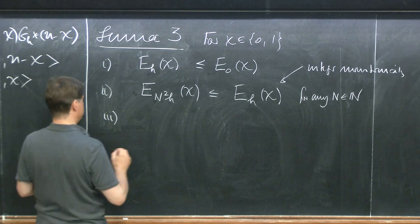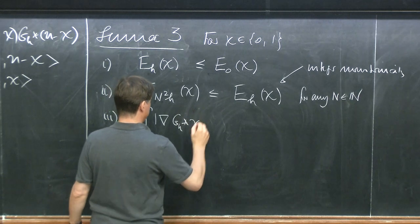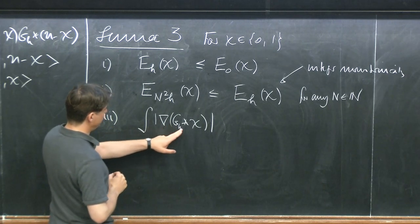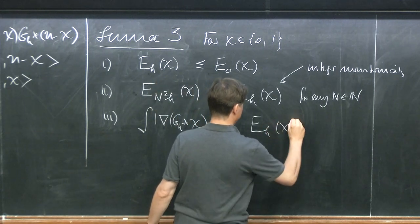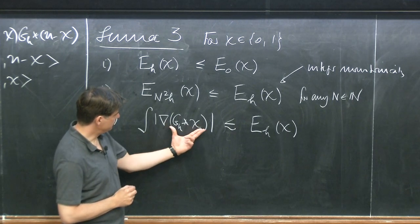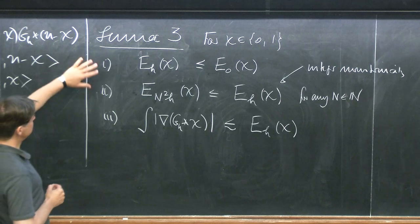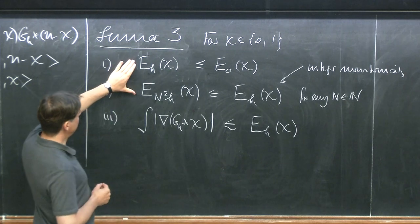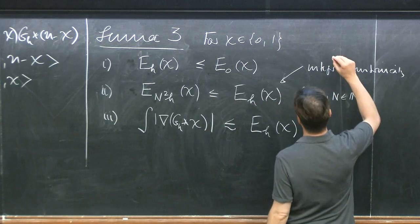There is a third property I want to state: for an arbitrary configuration, if you look at the L1 norm of the gradient of the convolution, it is estimated up to some constant by the energy. So the energy, even for finite h, is strong enough to control the BV norm of the convolved configuration. Those are all three statements for fixed configuration. Let me show you the proof of at least the first two.